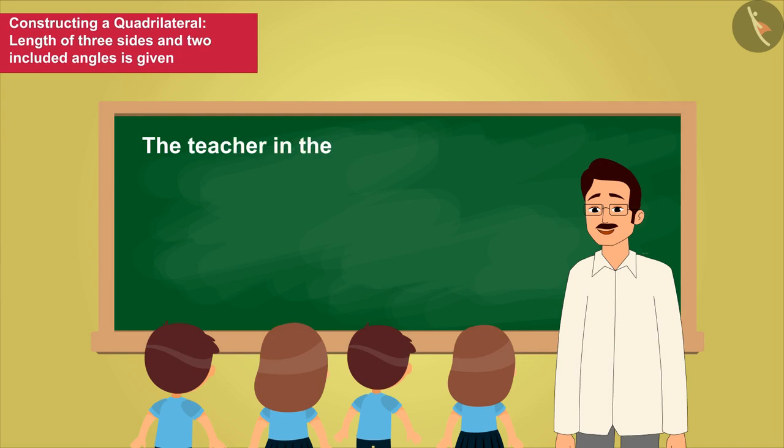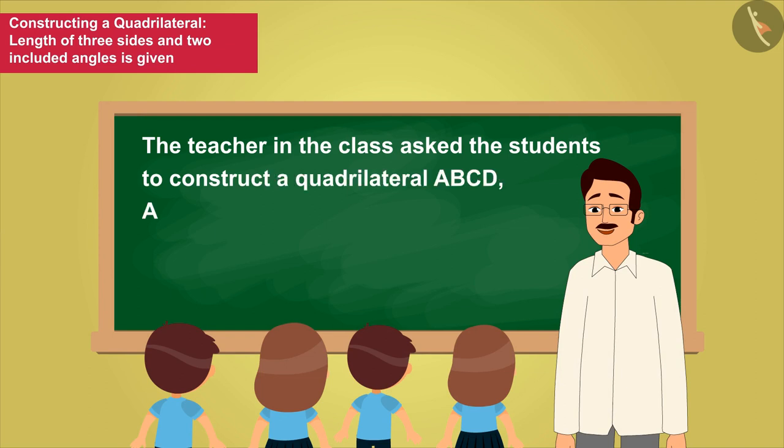The teacher in a class asked the students to construct a quadrilateral ABCD where AD equals 7 cm, BC equals 5.5 cm, CD equals 6 cm, angle C equals 120 degrees and angle D equals 45 degrees.